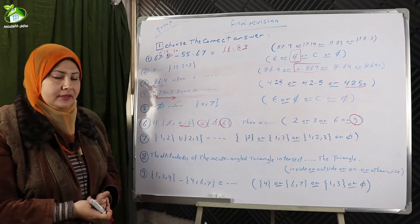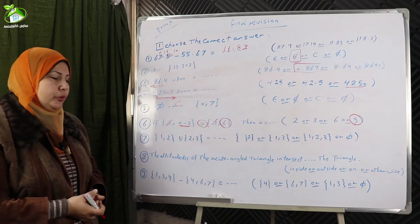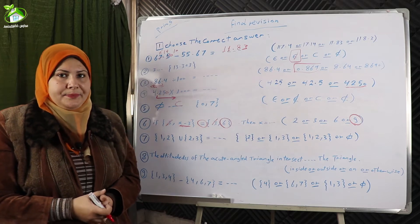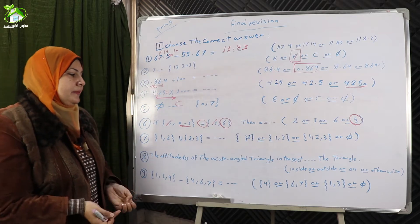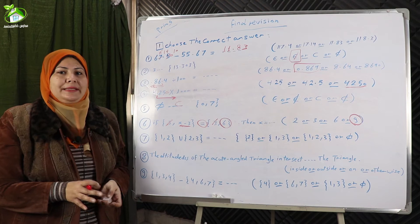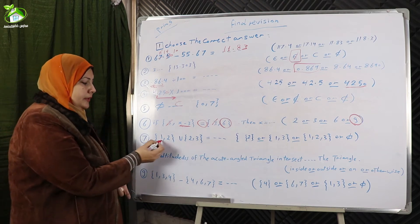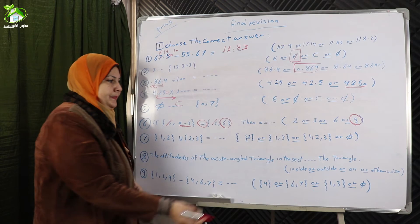Number seven: the set {1, 2} union the set {2, 3}. For union, I will write all elements from both sets without repeating any elements. So the result is the set {1, 2, 3}.